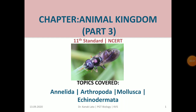Hello friends, how are you? I hope you all are safe at home, be safe at home. Today in this session we will discuss about the third part of animal kingdom of 11th standard. Here we are going to discuss Annelida, Arthropoda, Mollusca and Echinodermata. So let us start the session with salient features of Annelida.